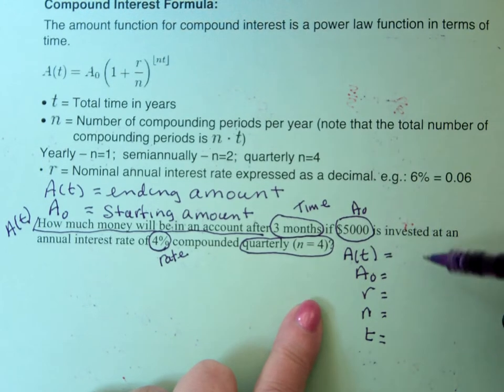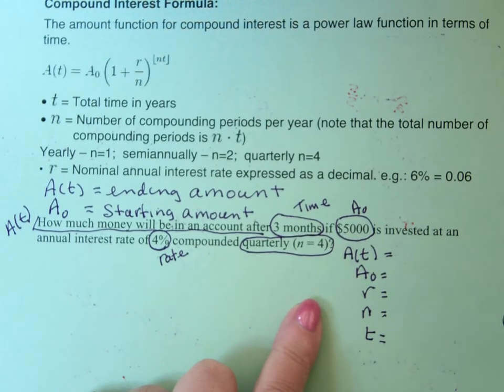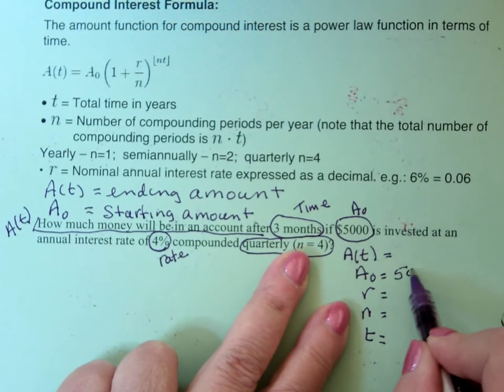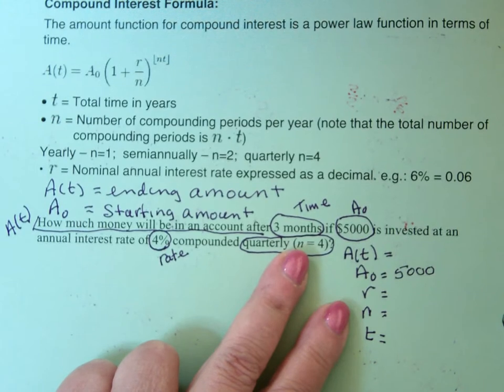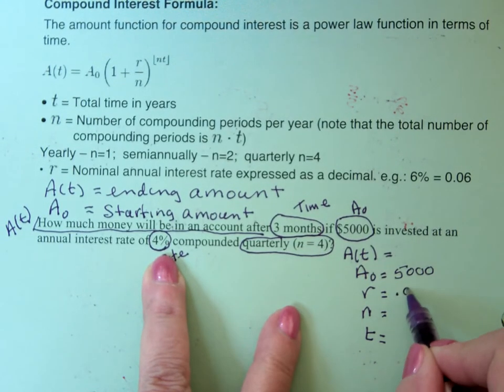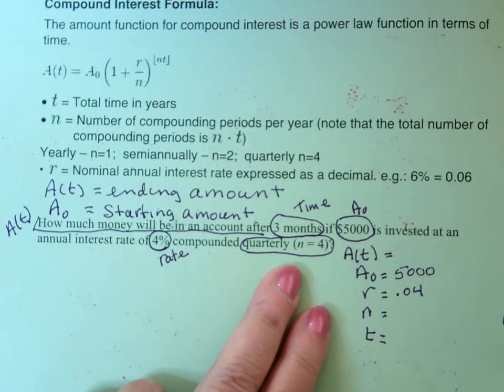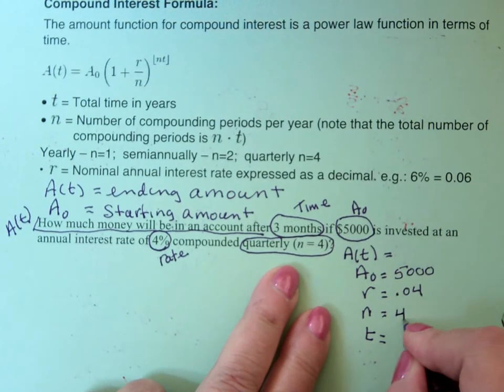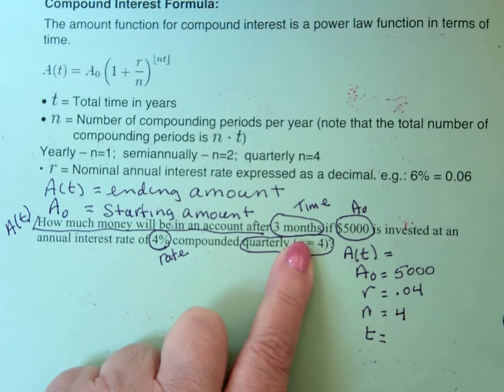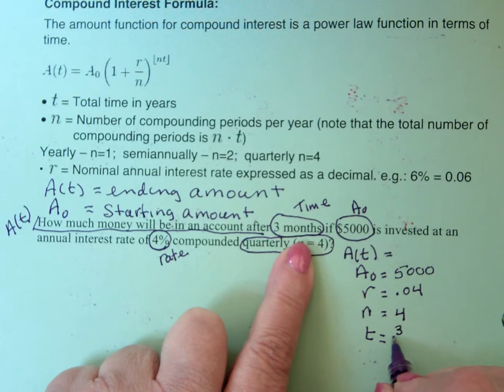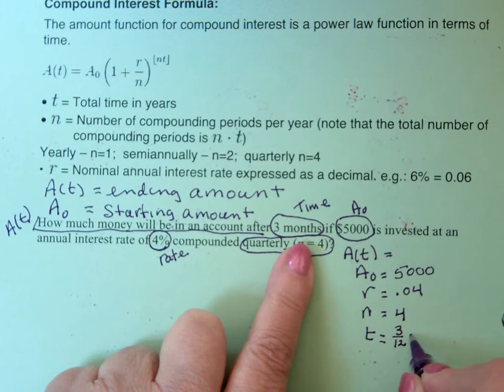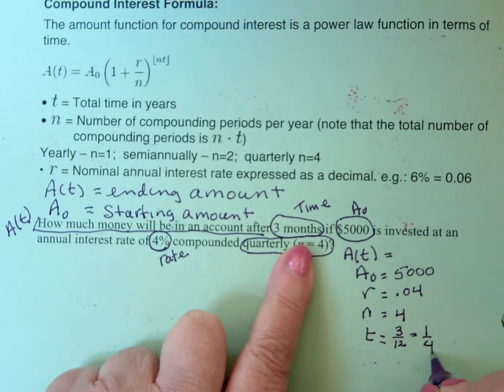Then I'll go in and say, oh, I know what the beginning amount is. A sub 0 is $5,000, because they gave that to me. I know what the rate is. The rate is 4%. That's .04. Quarterly means that N is 4. Time is 3 months, but we need to change months into years. Time is 3 over 12. So that's 3 twelfths of a year, which ends up being 1 over 4.